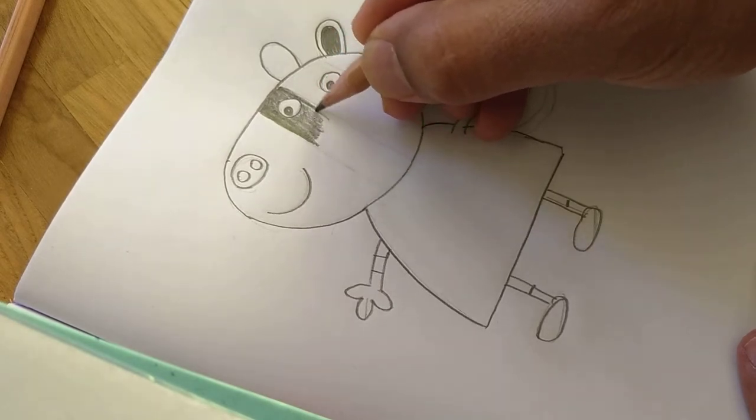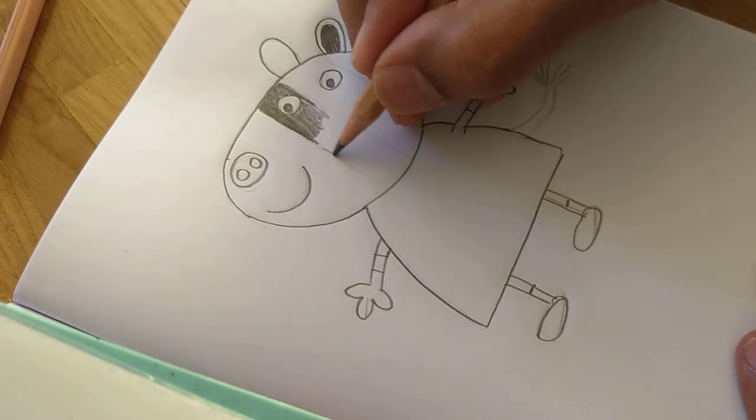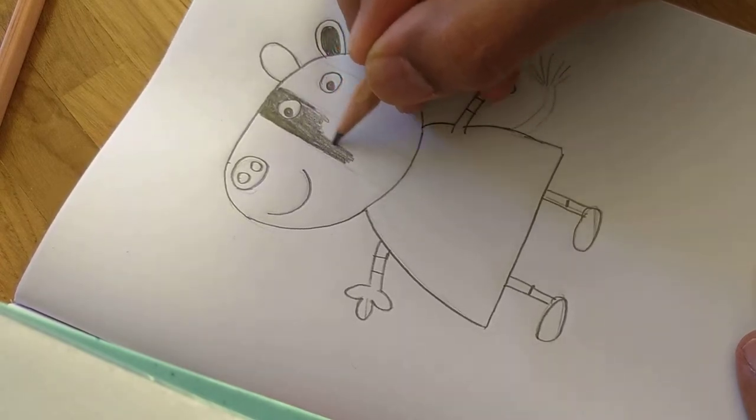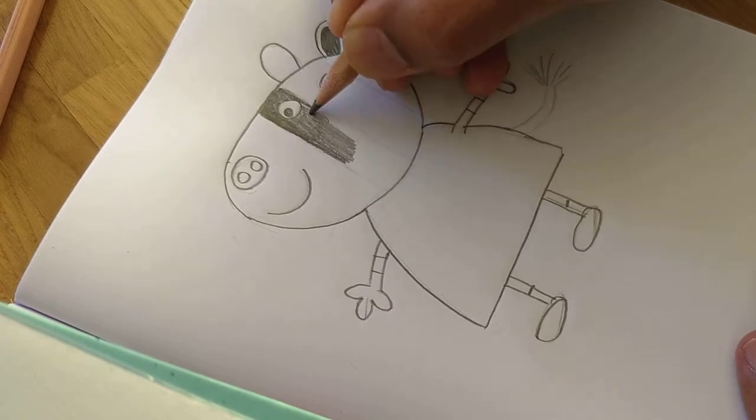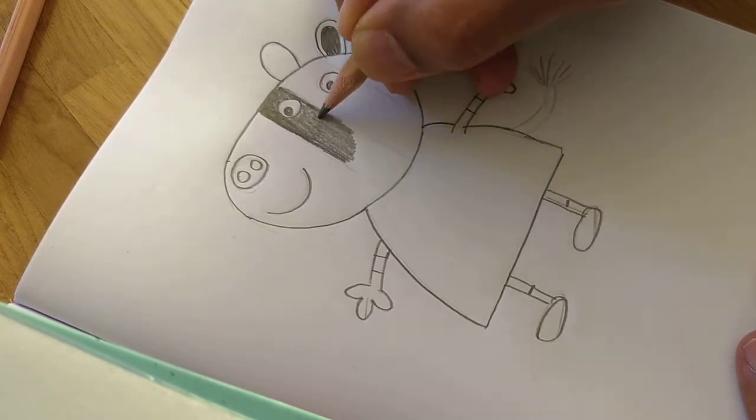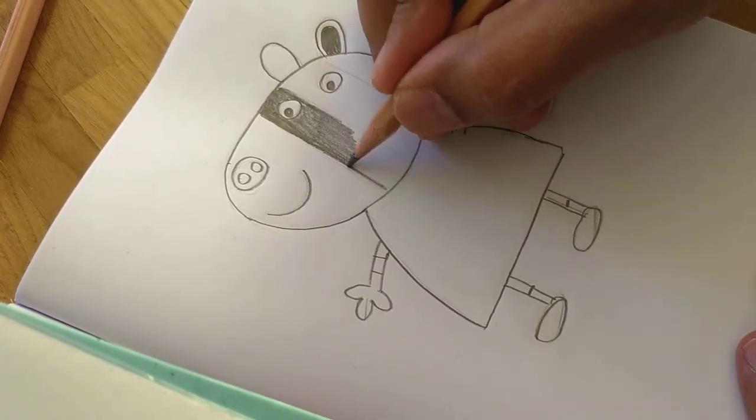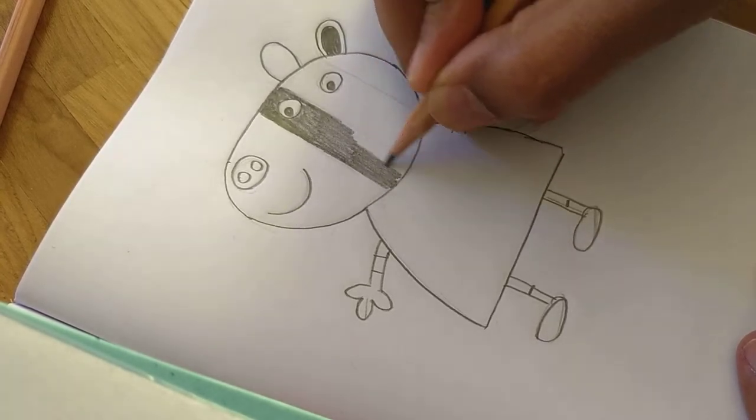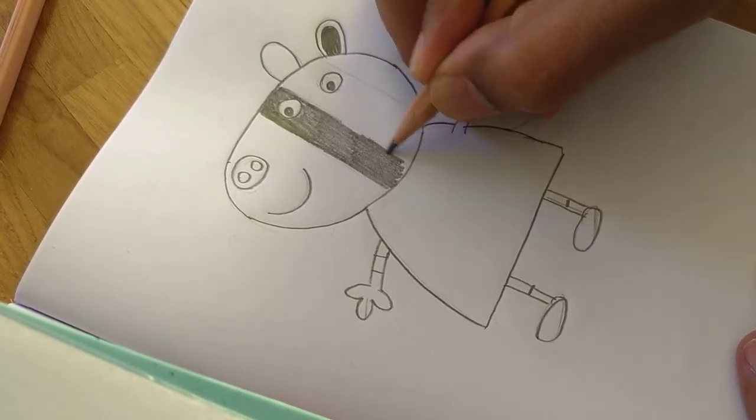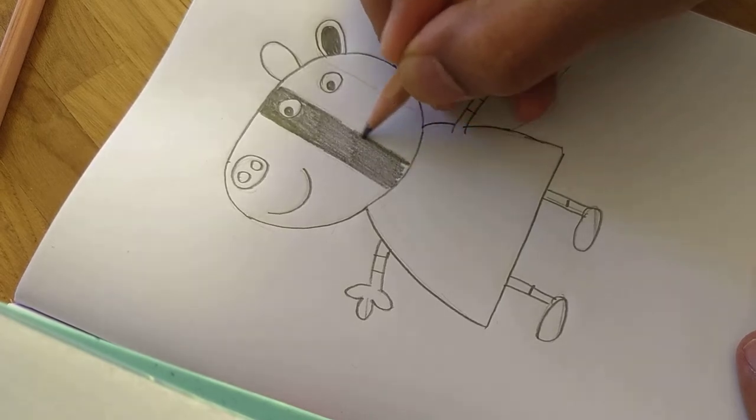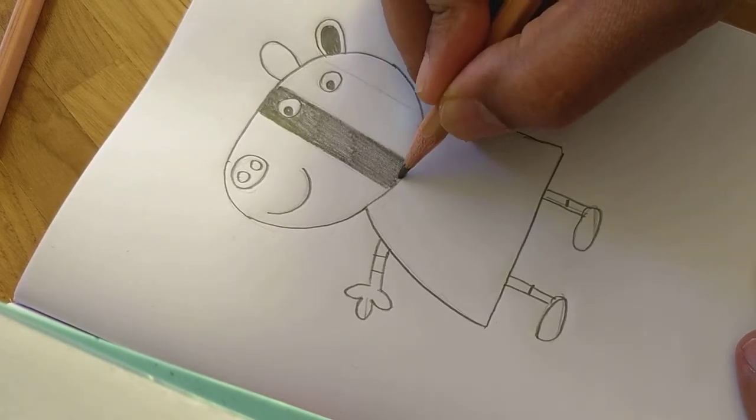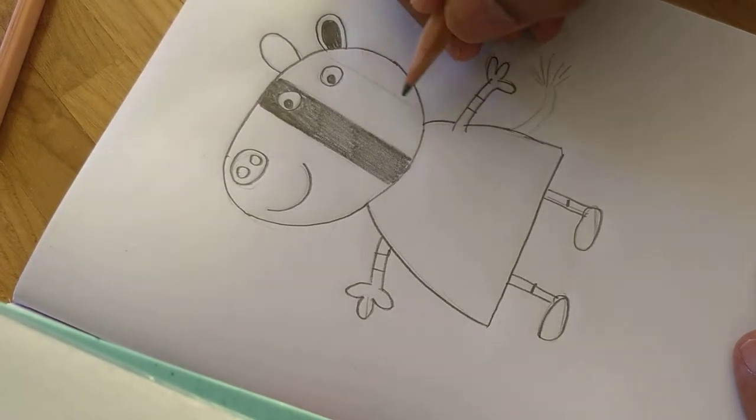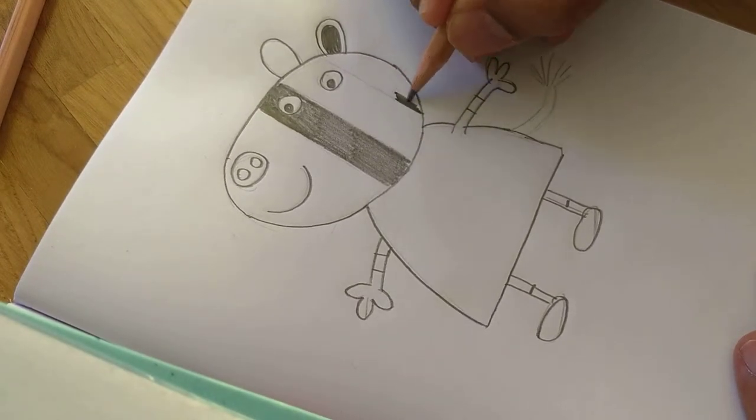Make it uniform. Make sure that the strokes what you apply, for example if you're applying the horizontal stroke, through the drawing it has to be like horizontal. You shouldn't change the strokes, it has to be like this.